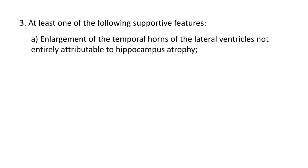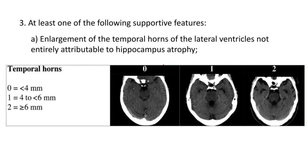In addition, you should have one of several other features. The first is enlargement of the temporal horns not entirely attributable to hippocampal atrophy, which you can see here. Much of the guidance states that greater than six millimetres would be consistent.